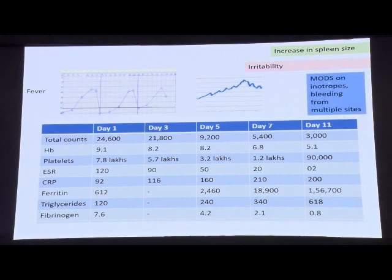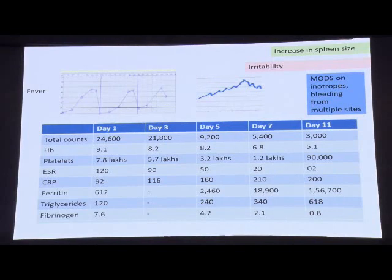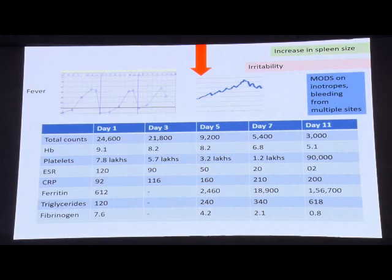From day 11, he had frank features of MAS: counts of 3,000, platelets 90,000, ESR of 2, high CRP, very high ferritin, very high triglycerides, and very low fibrinogen. He developed multi-organ dysfunction syndrome, required inotropes, and had bleeding from multiple sites. MAS should have been picked up at day 5, not day 11. Blindly applying criteria would only identify MAS at day 11. We must look at the trend of laboratory parameters and the pattern of fever.